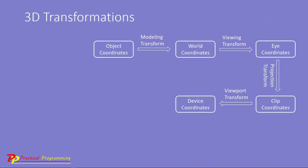From here, you can see that we define our 3D object in object coordinate system. We then perform various transformations on the object, including scaling, translation, and rotation. We call this transformation the model transform. After this transformation, we convert the object in object coordinates into the object in world space. Next, the view transform locates the viewer in the world space and transforms our 3D object onto camera coordinates, sometimes also called eye coordinates.